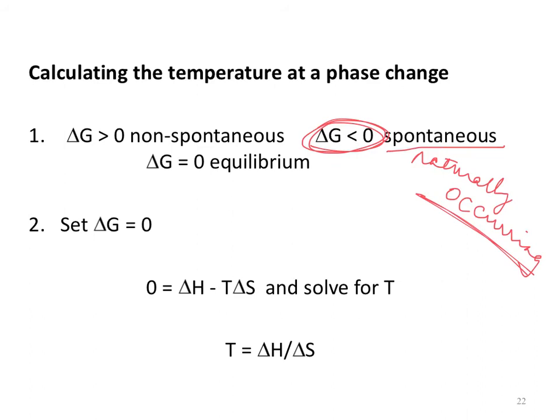Consider a rock at the bottom of a hill — it's not going to climb up on its own; you'd need a crane to carry it to the top. A rock tumbling down the hill is a natural process; putting it back on top is unnatural. When ΔG is positive, it's a non-spontaneous process; when ΔG is negative, it's spontaneous. At equilibrium — and all phase changes are equilibrium processes — ΔG equals zero.